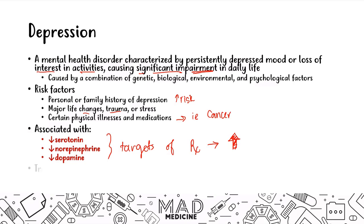When it comes to treatment, there are multiple things you can do, and usually a multi-pronged approach is used ideally. Not always — in the clinical setting, sometimes physicians just prescribe antidepressants. But usually it's cognitive behavioral therapy and antidepressants, and that's what you need to know for Step 1. These are the main things you're going to use.